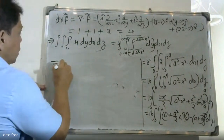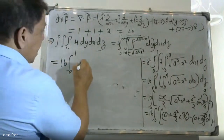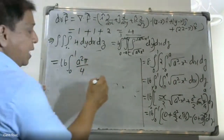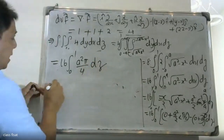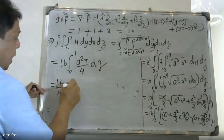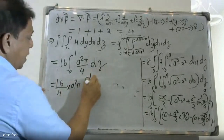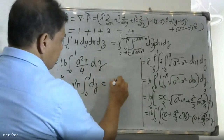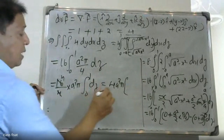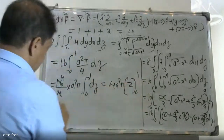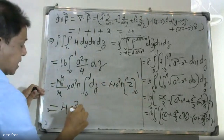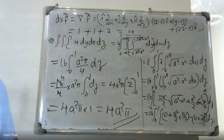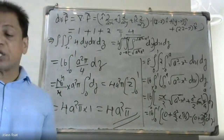This equals 16 times the integral from 0 to 1 of (s squared times pi over 4) dz, which gives s squared times pi over 4. The final answer is 4 pi s squared — that is, the flux equals pi s squared times 4, simplified as 4 pi s squared.